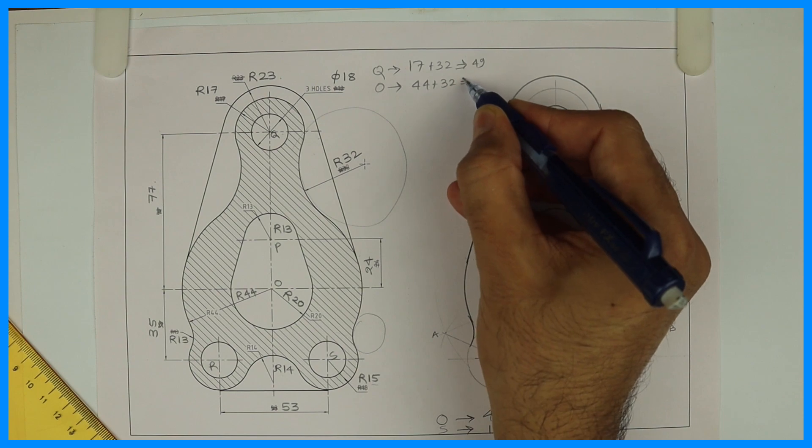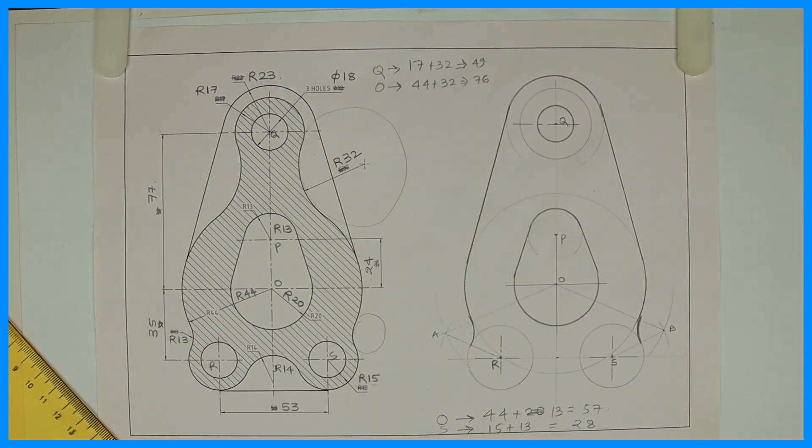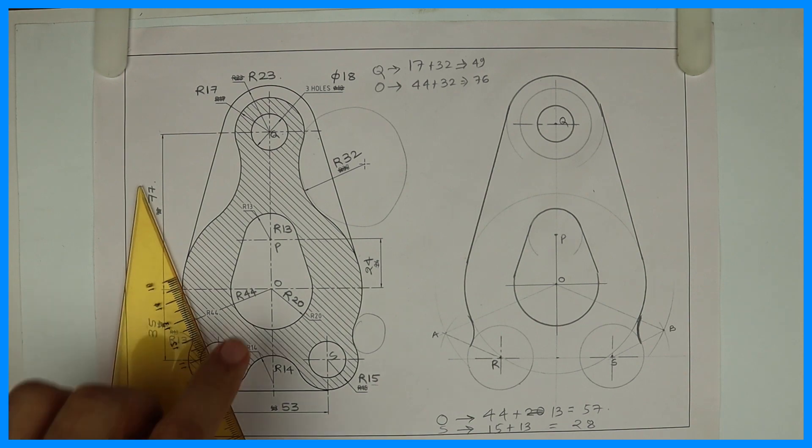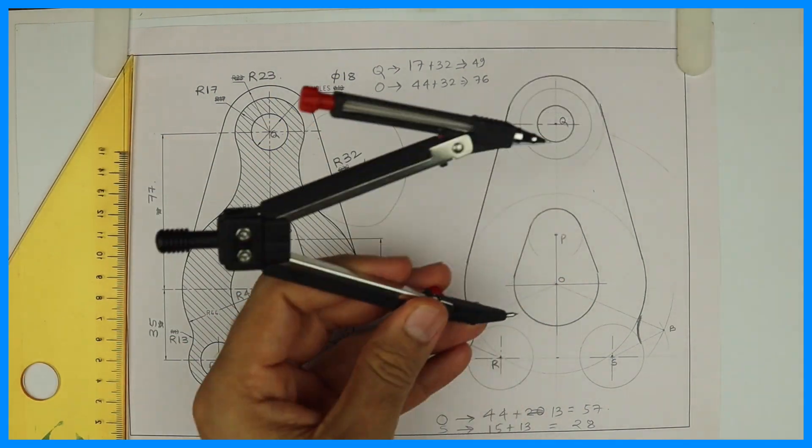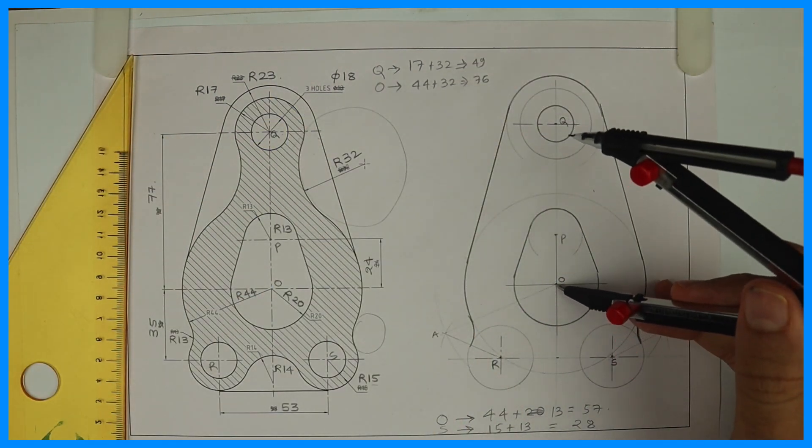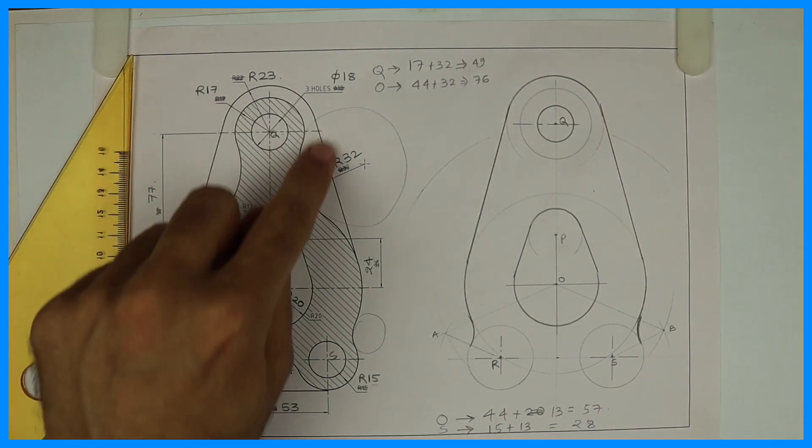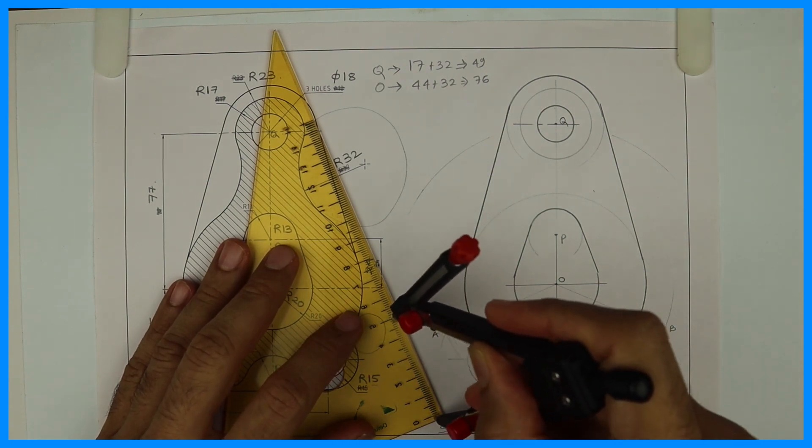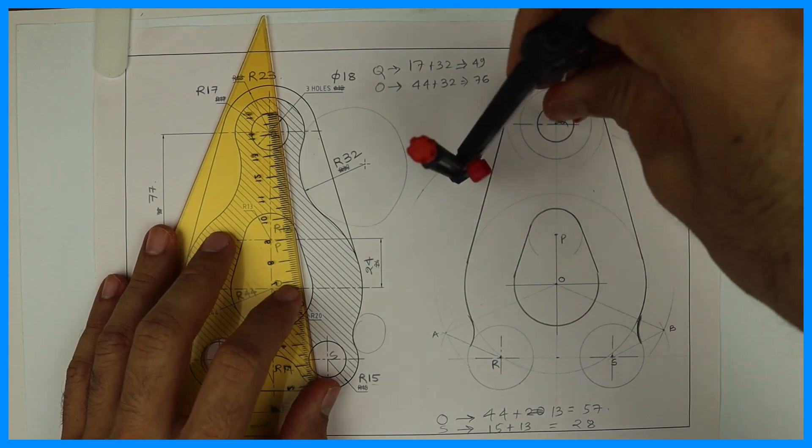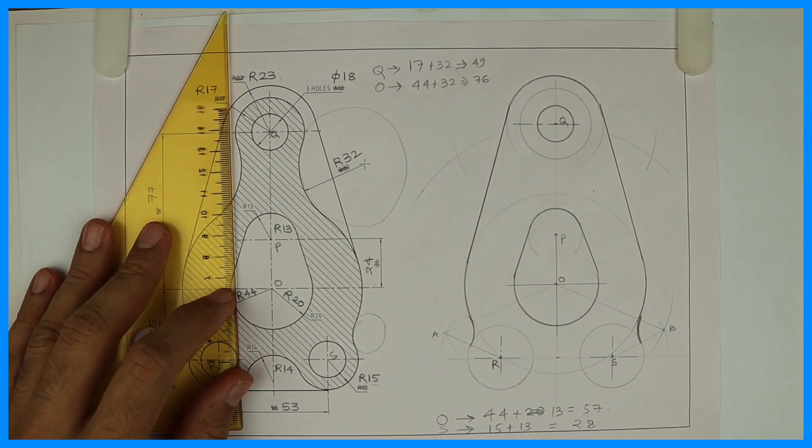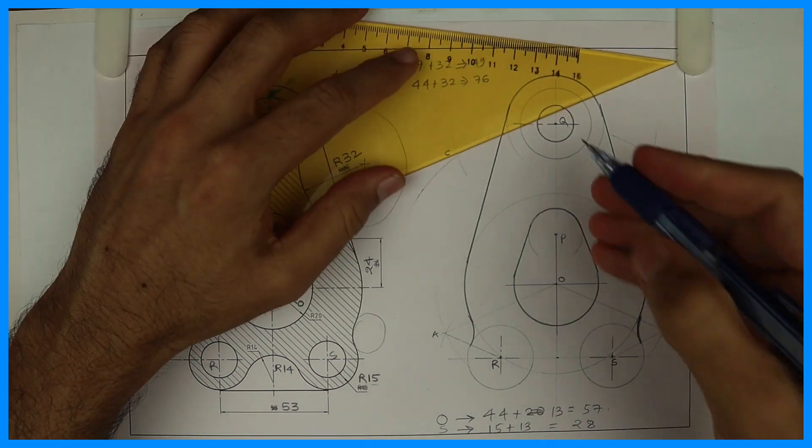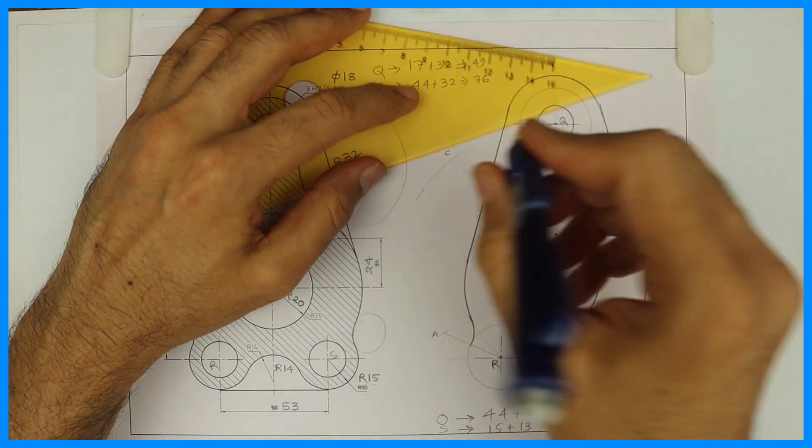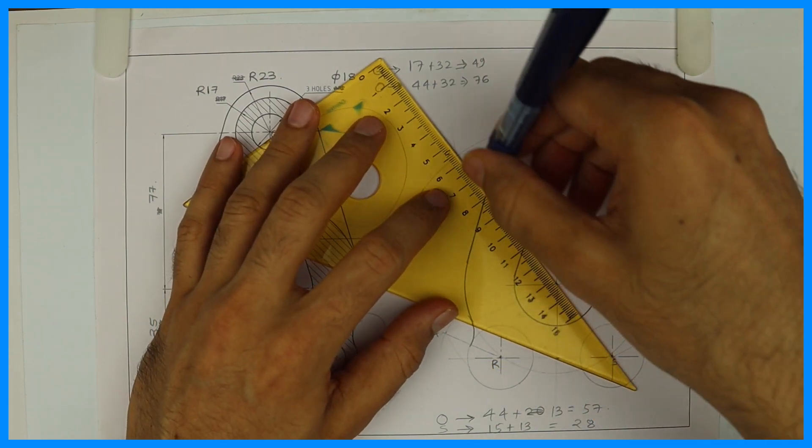And from O will cut 44 plus 32. Many times people they take it from P, that is wrong, so just keep that in mind. From O we need to take 76, not from P. From O I will cut 76 and from Q I'll cut 49. Wherever they intersect that is point C and D. You can join C to Q and O to C so you'll get the exact point.